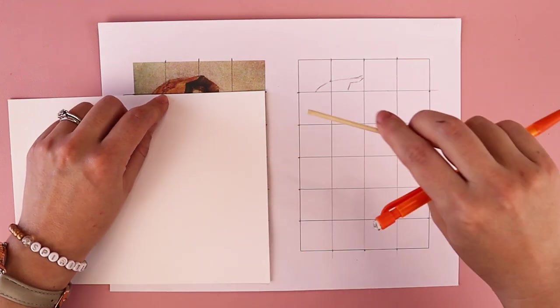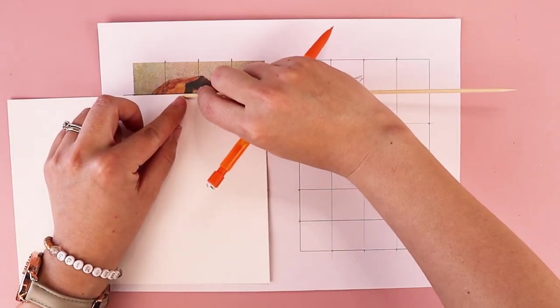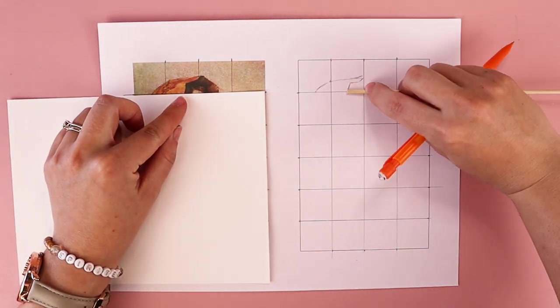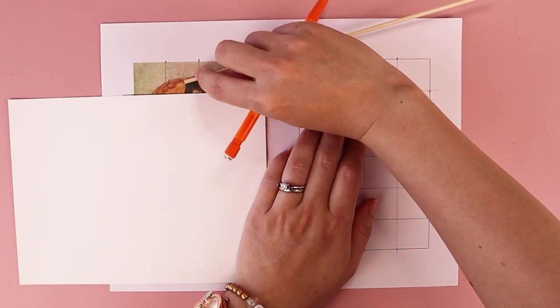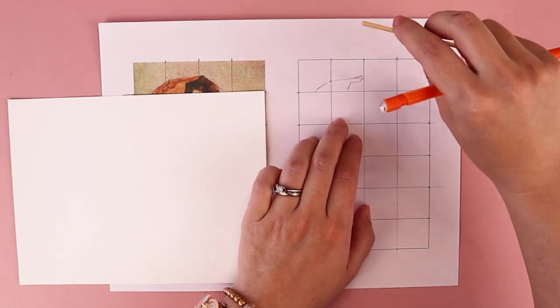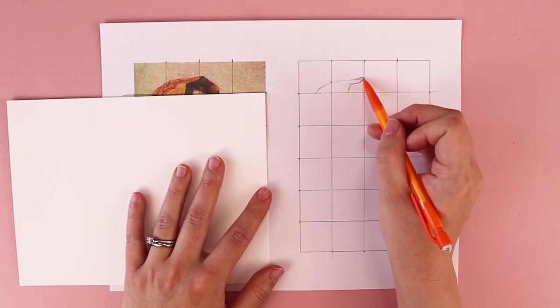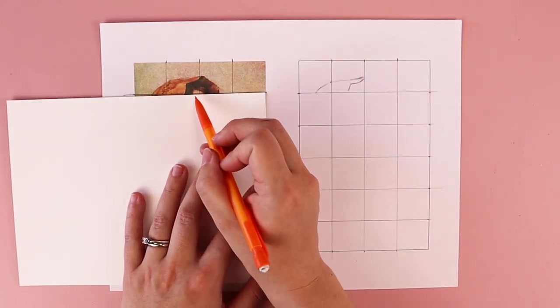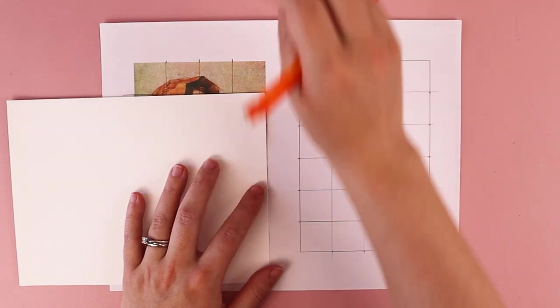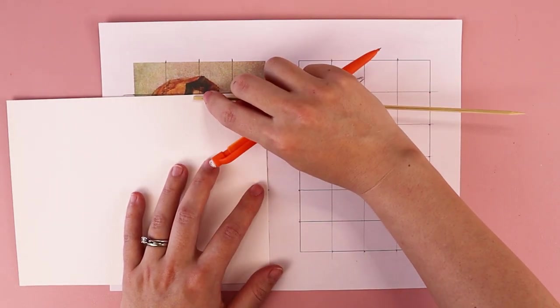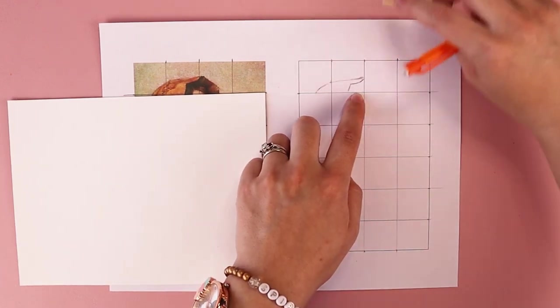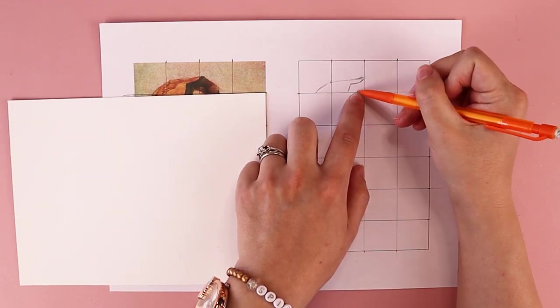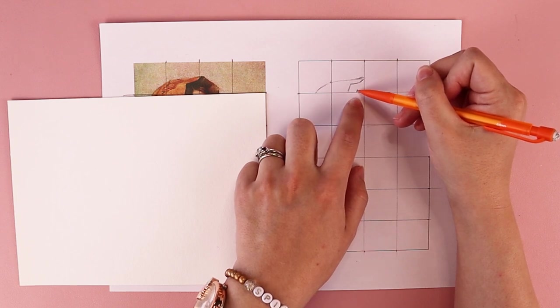And I can double check my measurements to make sure that I'm going far enough in my sketch. I can also see this little bit of her forehead sticking out. So I want to make sure that I'm putting in some marks to show that little section as well.